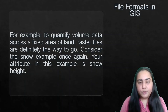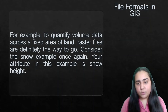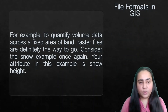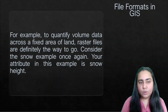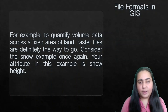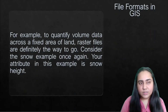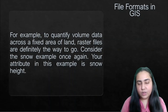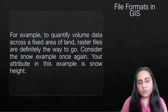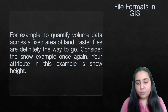To quantify volume data across a fixed area of land, raster files are definitely the way to go. Consider the snow example from the previous video — your attribute is snow height. You could show different colors in raster format to indicate where snow height is more or less, and use more boxes to indicate greater snow depth in a given area.